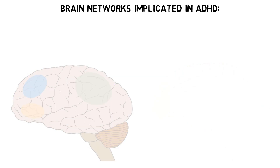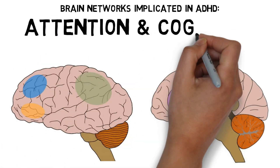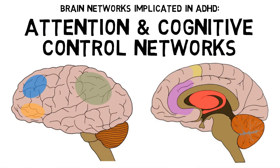Individuals with ADHD also display lower activity in brain networks that are involved in attention and cognitive control. Typically, activity in these networks increases when activity in the default mode network decreases, and vice versa. Thus, one hypothesis is that in ADHD, activity in the default mode network is dysregulated and interferes with the function of networks involved in attention and cognitive control.